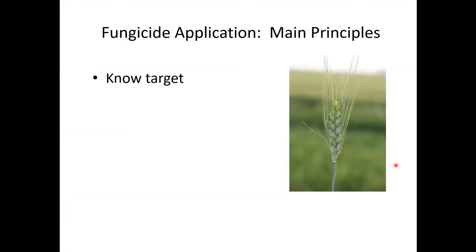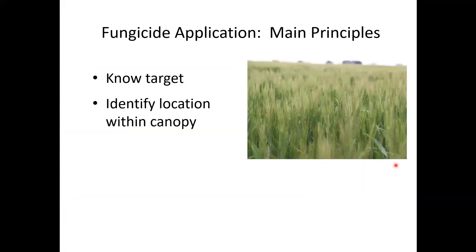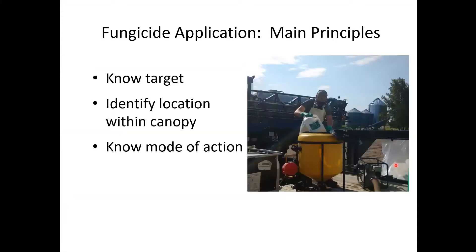The main principles of fungicide application are: first, know your target — where is the disease going to be, where does your fungicide have to be, does the disease migrate within the plant canopy or does it land on the final target? Find out where that target is within the canopy. The head we focus on here is at the top of the canopy, but you can also have leaves and stems further down with a different targeting situation.